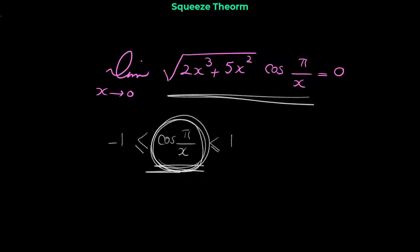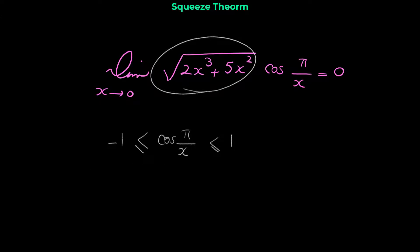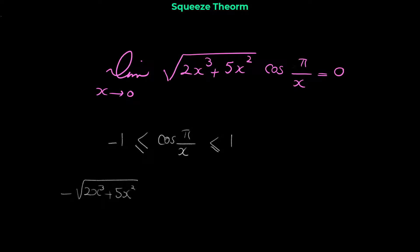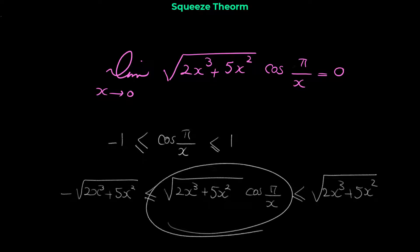What is the difference between this inequality and the expression in our limit? Of course, the radical. So now we multiply both sides of this inequality by the radical √(2x³ + 5x²). If we multiply by the radical, then we have: −√(2x³ + 5x²) ≤ √(2x³ + 5x²) · cos(π/x) ≤ √(2x³ + 5x²). We multiply everything by the radical, so now in the middle we have the expression we want.